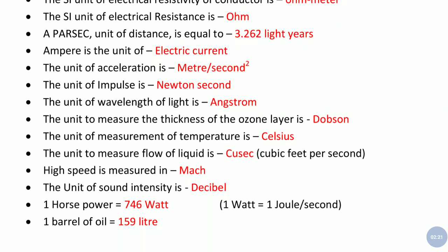What is the unit of acceleration? Meter per square second. Unit of impulse is Newton second. Just try to memorize this because it has been asked in various exams. Unit of wavelength of light is angstrom. The unit to measure the thickness of ozone layer is dobson. This is important, it has been asked in many PCS exams.